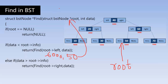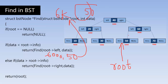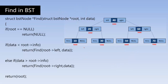Now root is pointing to the node at address 6000 with data 50. If root equals null — no. Is data less than root arrow info — no. Is data more than root arrow info — no. If the data is not less than and not more than root arrow info, then we have found the element. Return root, which is 6000 — the address of the node containing 50. So this is the simple code for finding an element.